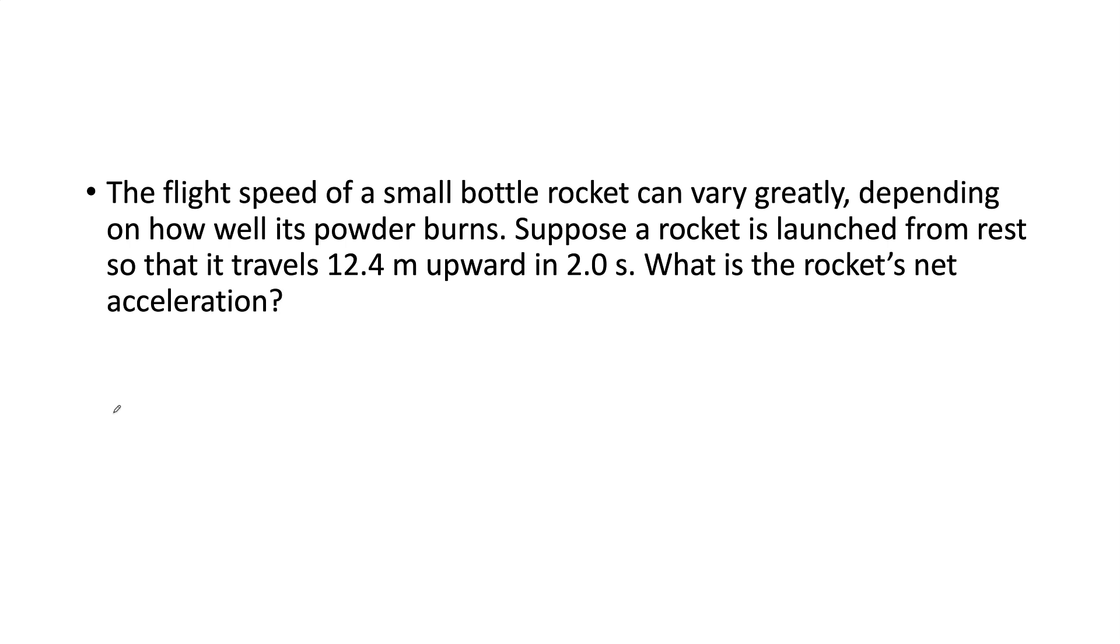So let's solve a problem with this. We're looking at the speed of a small bottle rocket can vary, and here's condition-wise, so this first part from here to here is basically describing what's happening, what we're looking at.